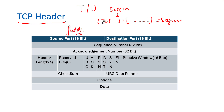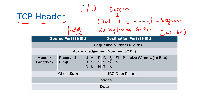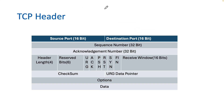The first question is: what is the size of the TCP header? The answer is a minimum of 20 bytes and a maximum of 60 bytes. So the range is 20 to 60 bytes, meaning up to 40 bytes of optional fields can be added. Minimum is 20 bytes, optional fields add up to 40 bytes, making the total maximum 60 bytes.